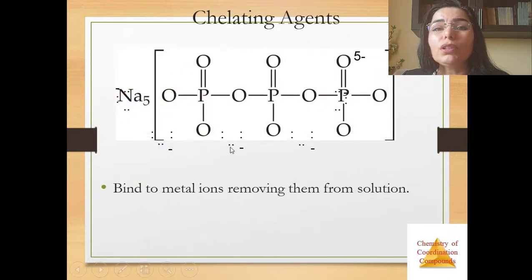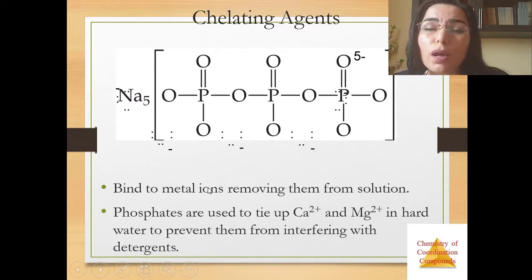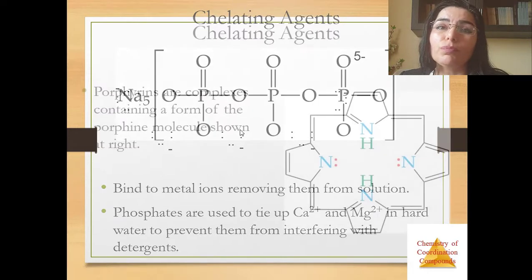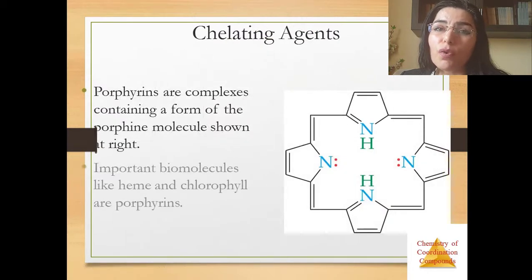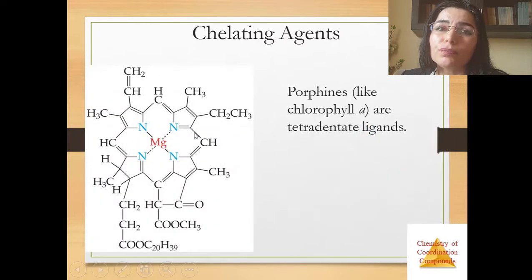They bind two metal ions removing them from solution. Phosphates are used to tie up calcium and magnesium in hard water to prevent them from interfering with detergents. Porphyrins are complexes containing a form of the porphyrin molecule shown at right here and important biomolecules like heme and chlorophyll are porphyrins. You see here formula of chlorophyll. Porphyrins like chlorophyll are tetradentate ligands.